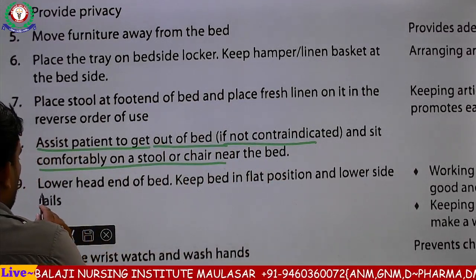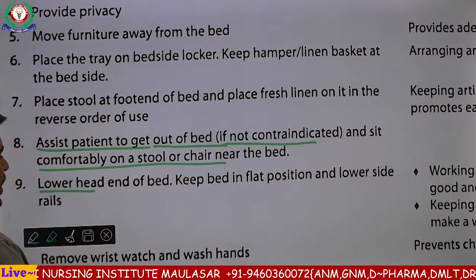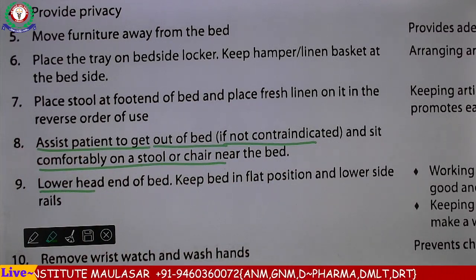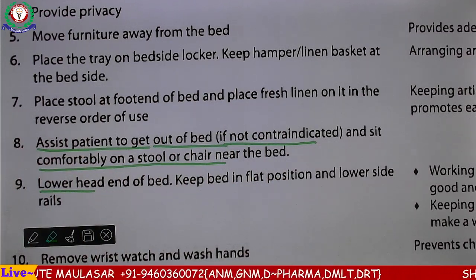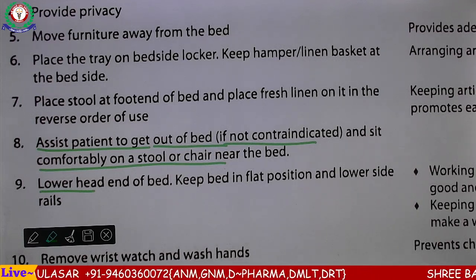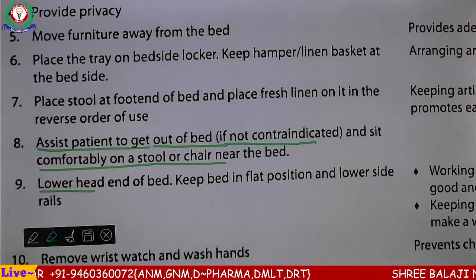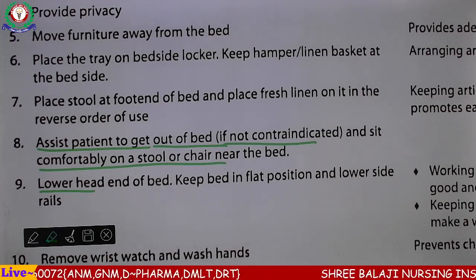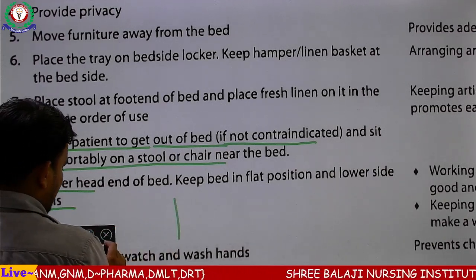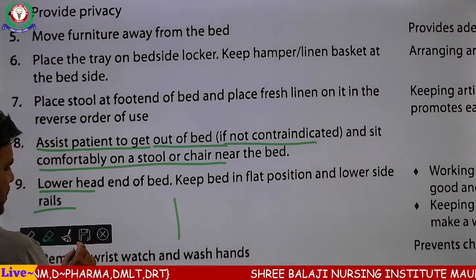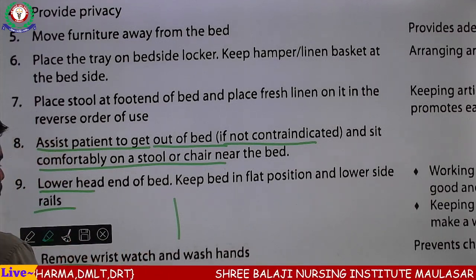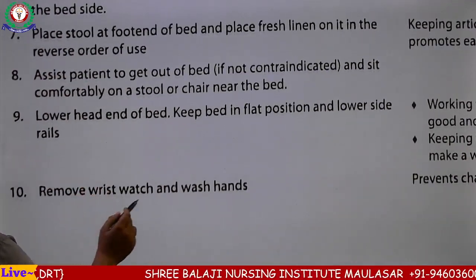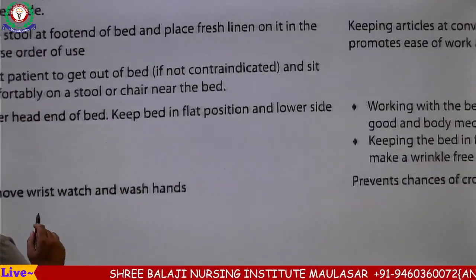Next: lower head end of the bed, keep bed in flat position and lower side rails — side rails को नीचे करना है, विस्तर का निचला सिरा समतल करना है, और side rails जो होती हैं उसको भी नीचे कर देना है। Remove wrist watch and wash hands — अपने खुद के हाथ धोने हैं, अगर कोई घड़ी पहन रखी है वो भी remove कर देना है।